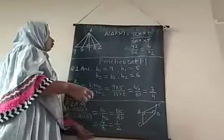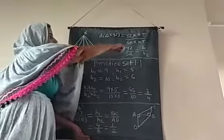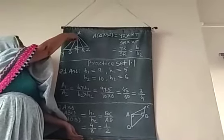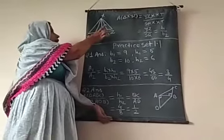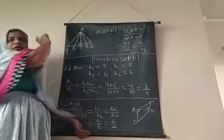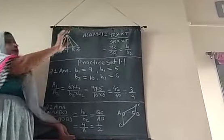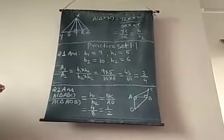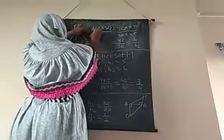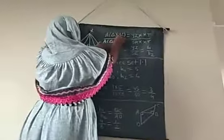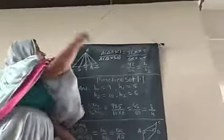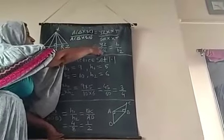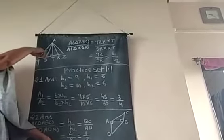Similarly, when the heights of the triangles are equal, then only base ratios are used. In triangle XYZ, XT is the perpendicular drawn from vertex X to side YZ. XT is also perpendicular to triangle XSR. So both triangles share the same height XT. Therefore, area of triangle XYZ upon area of triangle XSR equals YZ multiplied by XT upon SR multiplied by XT. XT cancels, giving YZ upon SR, that is B1 upon B2.